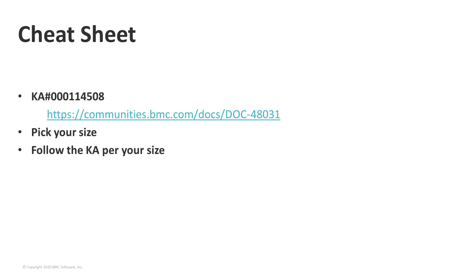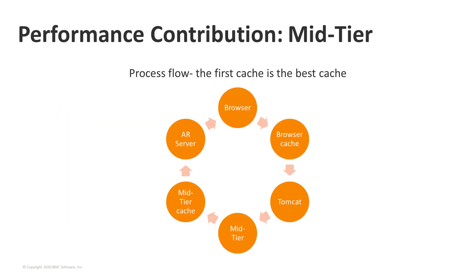We have a cheat sheet that you can copy down the link to here. It's as simple as picking the size of your organization — size referring to number of concurrent users. Once you know that, you can pick your size, follow the KA per your size, and set up your Tomcat and Mid-Tier as instructed. The first thing I want to cover is a chart that shows the process flow from the first cache to the last cache that Mid-Tier might go to.